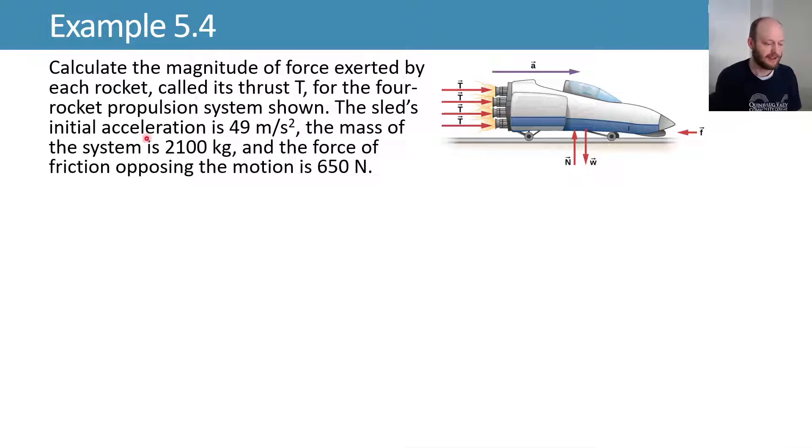So the sled's initial acceleration is 49 meters per second squared, and the mass of our system is 2,100 kilograms. The force of friction that's opposing our motion here is 650 newtons. So we want to know how much thrust does each of these four rockets have to exert for this to be true.